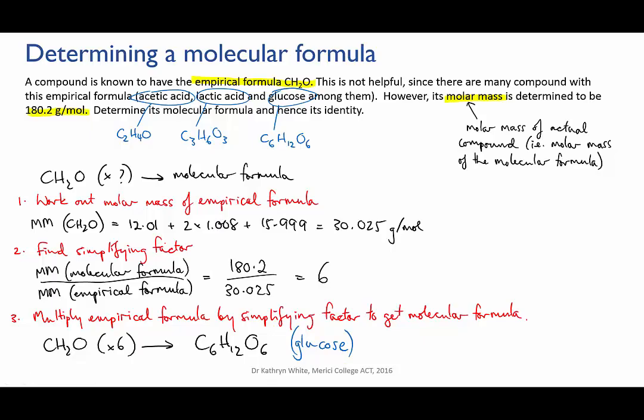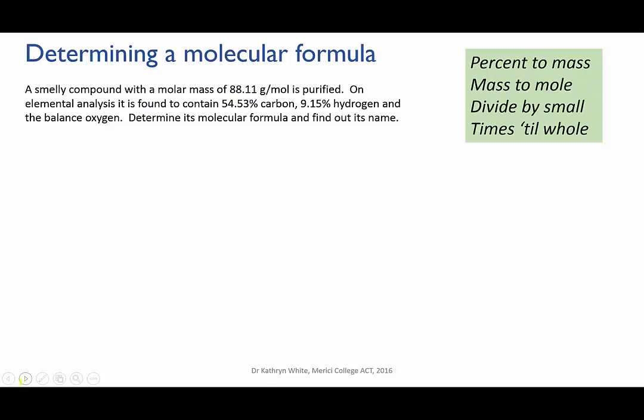Now let's try a problem where we go all the way from percentage composition through to the molecular formula. A smelly compound with a molar mass of 88.11 grams per mole is purified. On elemental analysis, it's found to contain 54.53% carbon, 9.15% hydrogen, and the balanced oxygen. Determine its molecular formula and find out its name.